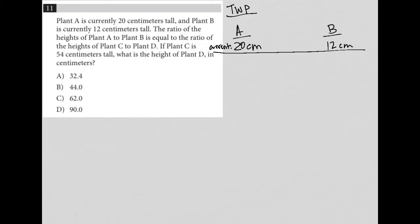The next sentence says the ratio of the height of plant A to B. So on this test, anytime you see the word ratio, you should think about a fraction. So A over B is equal to the ratio of the heights of plant C to D. So A over B is equal to C over D. I'm translating as I read. I'm writing things down as I go.